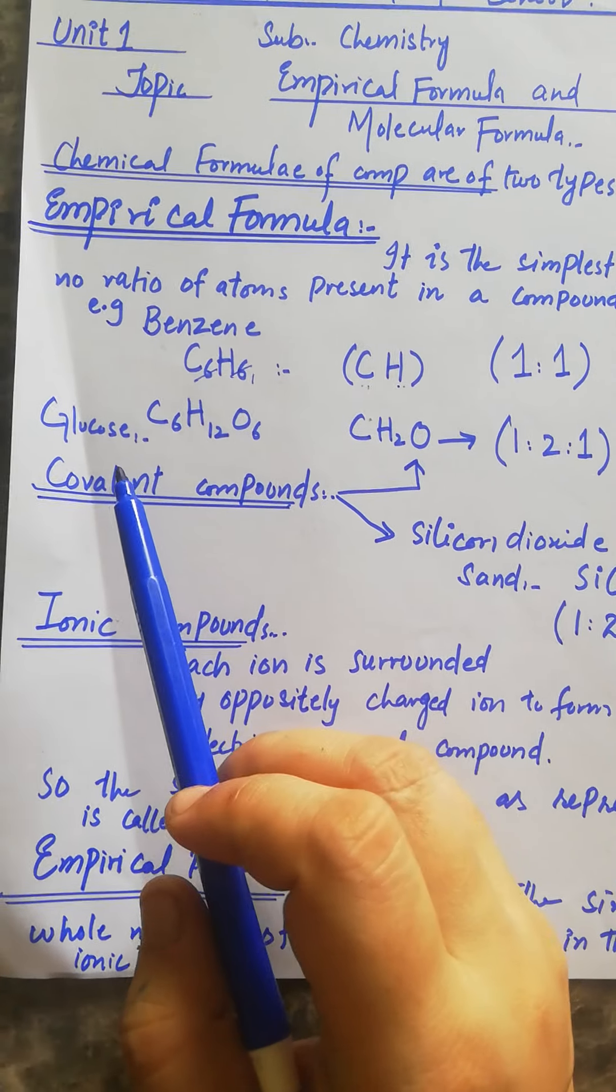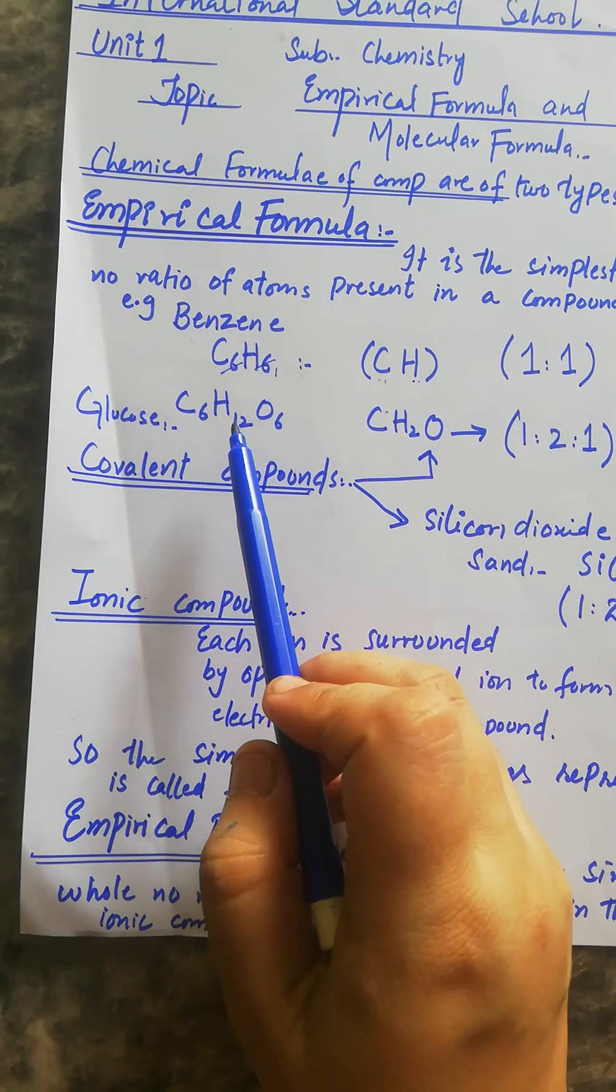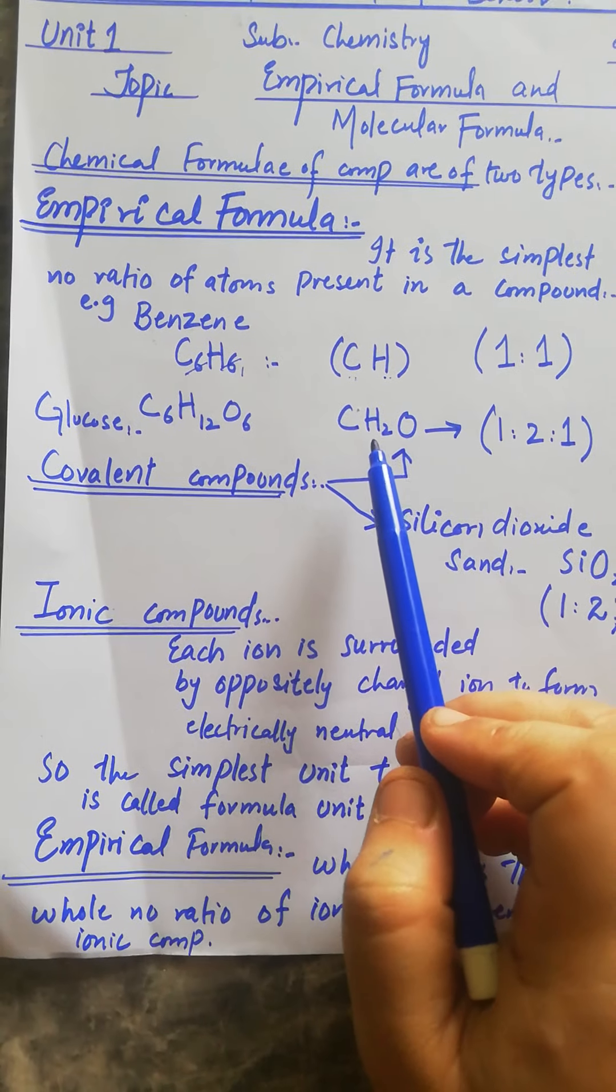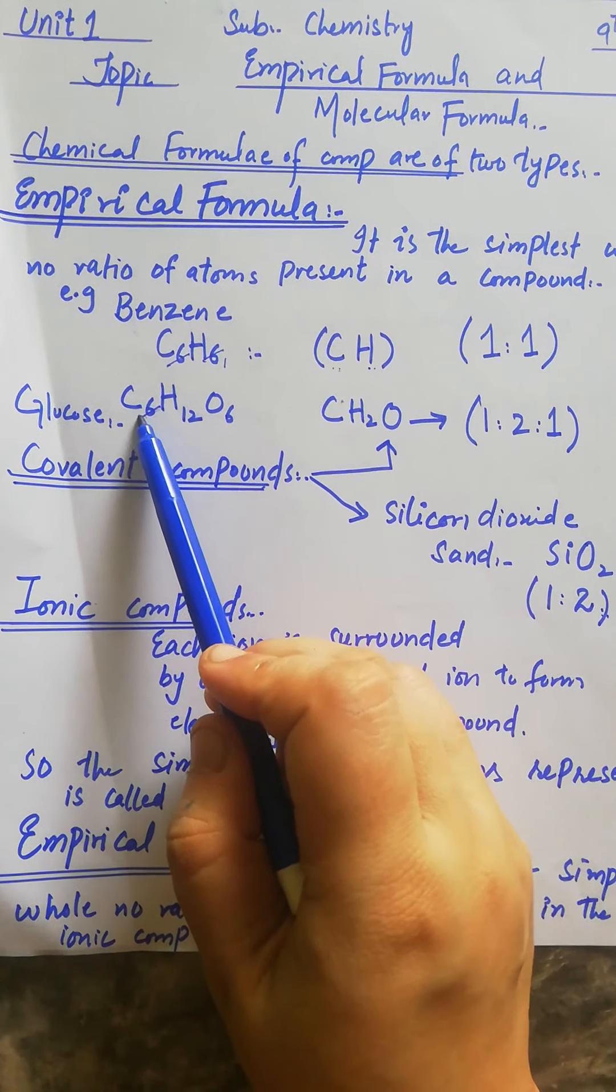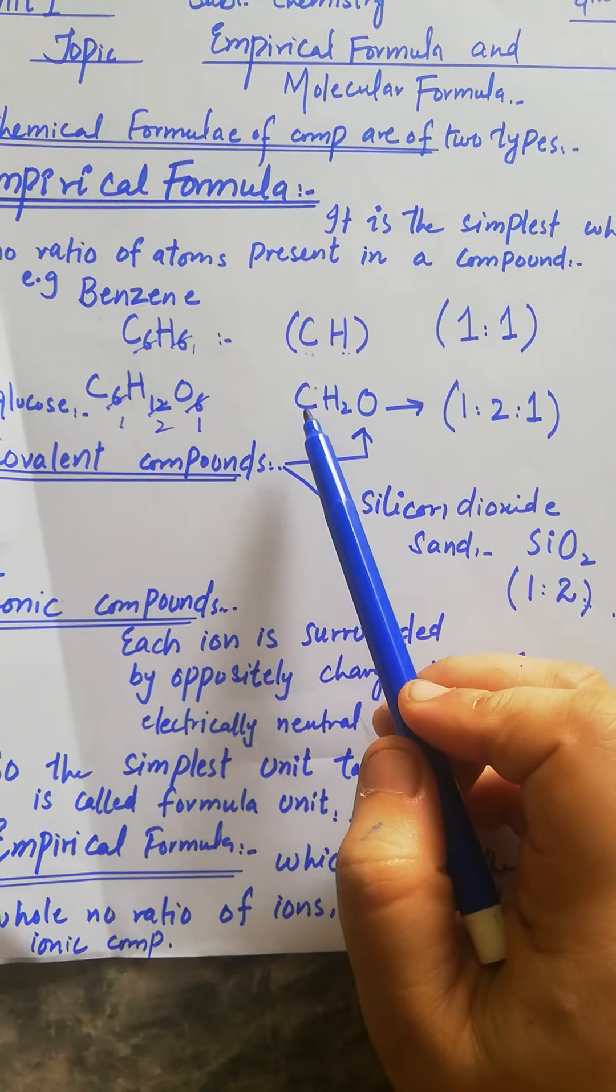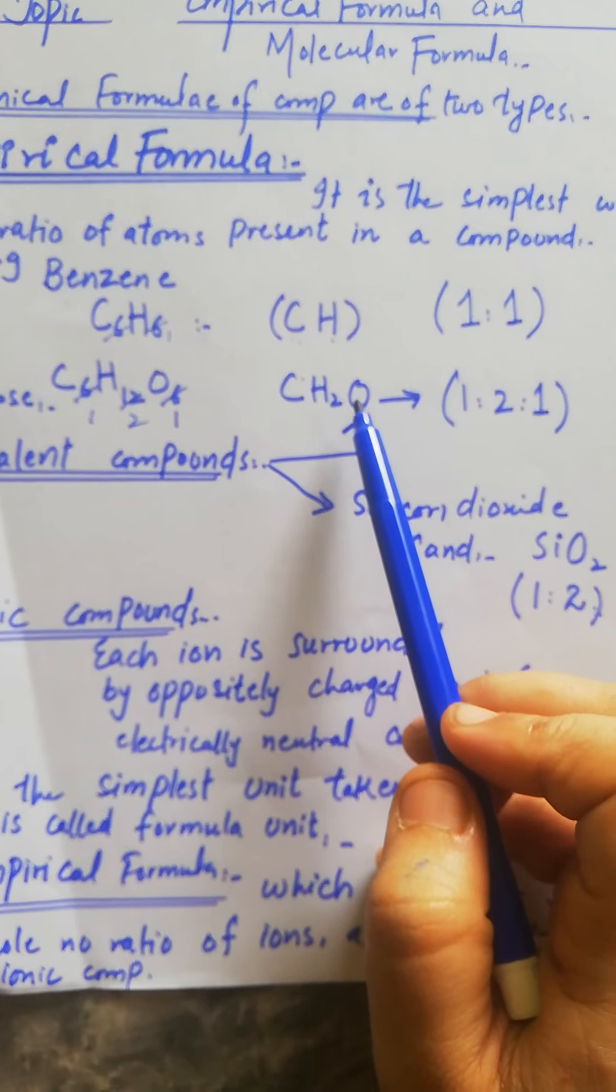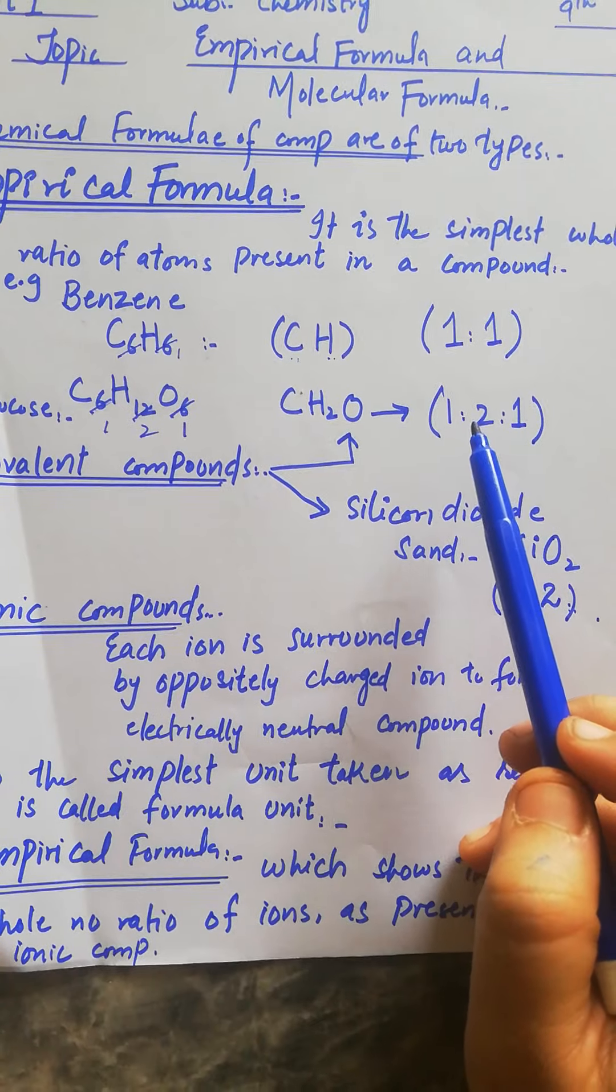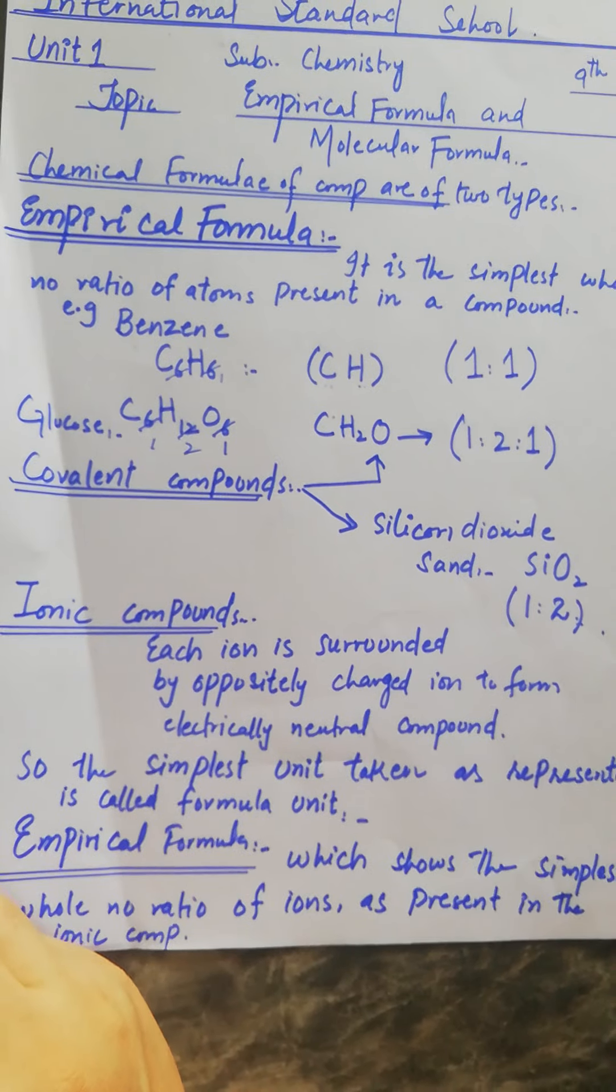Similarly, we take the example of glucose. Glucose has the formula C6H12O6, and if we simplify this, we get CH2O. If we divide by 6, we can see there are three elements: carbon, hydrogen, and oxygen. The simplest ratio between these atoms is carbon 1, hydrogen 2, and oxygen 1.